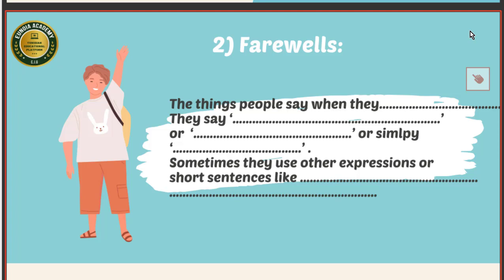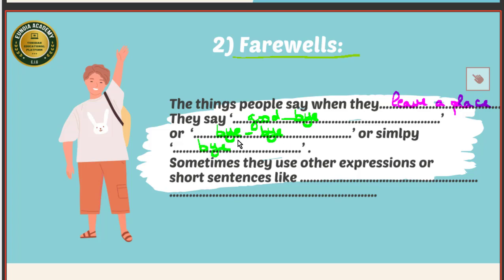Now, after greeting somebody, I want to say goodbye — or 'bye.' These things are called farewells. Farewells are things people say when they leave a place. You can say 'goodbye,' 'bye,' or 'bye bye.' Sometimes people use short phrases like 'take care,' 'see you,' or 'see you later.' These are all expressions you can use to say goodbye to somebody.